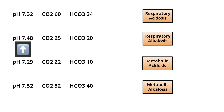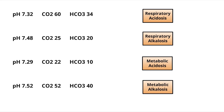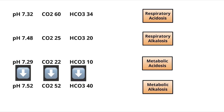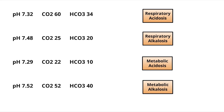Example two: pH is 7.48, which is more than 7.45 — so it is alkalosis. Both CO2 and bicarbonate are reducing, again in the opposite direction to pH. So again it is a respiratory process — hence respiratory alkalosis. Example three: pH is 7.29, CO2 is low, and bicarbonate is also low. The direction of change is the same as pH, hence it is a metabolic process — metabolic acidosis.